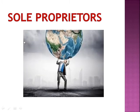Sole Proprietorship. The Sole Proprietorship is the simplest business form under which one can operate a business. It is not a legal entity. It simply refers to a person who owns the business and is personally responsible for its debts. A Sole Proprietorship can operate under the name of its owner or it can do business under a fictitious name. It does not create a legal entity separate from the owner.